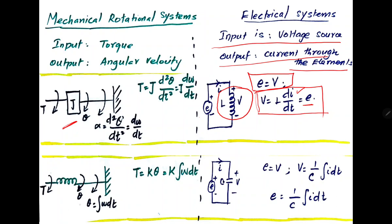At the same time, a rotational spring is equivalent to a capacitor. The equation related to that circuit is: E equals 1 by C times the integration of I with respect to dt. Using this equation, we can map the systems.